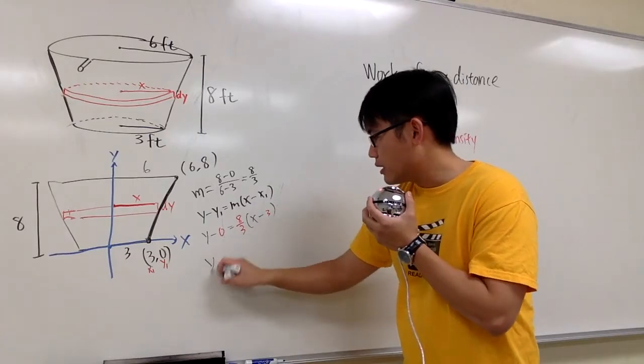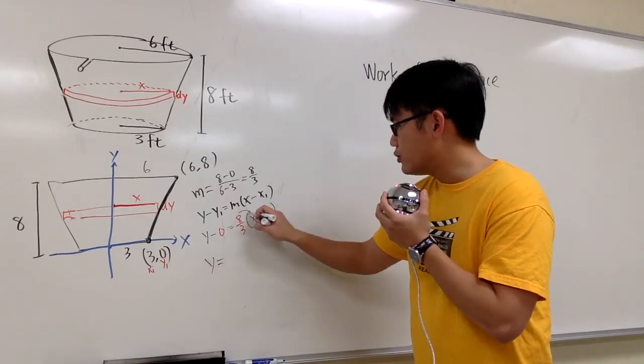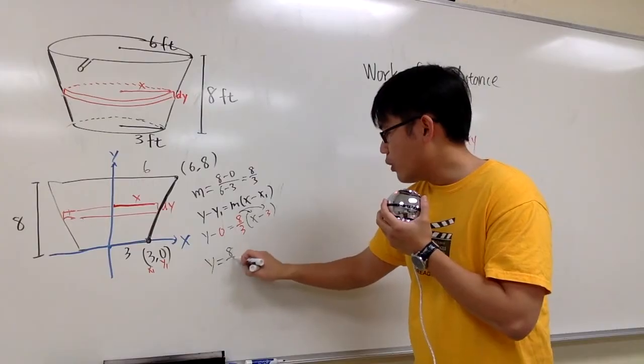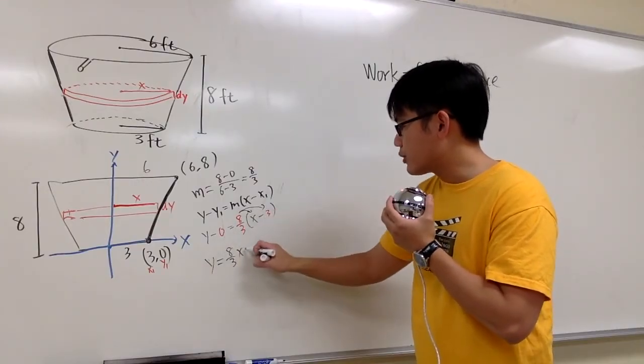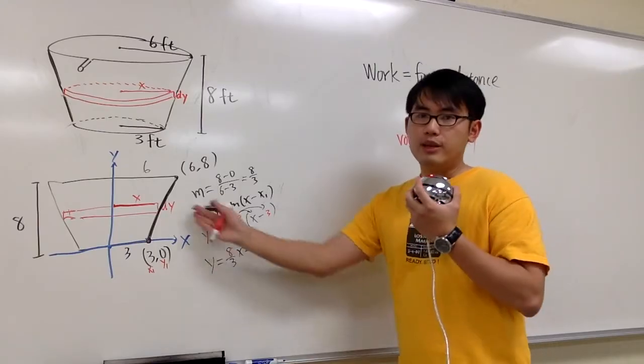y minus 0 is just y. I can distribute this into the parentheses and we get 8 over 3x. And 8 over 3 times negative 3 is going to be minus 8. So that's the equation of the line.